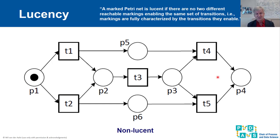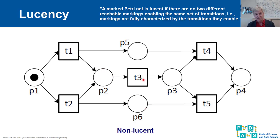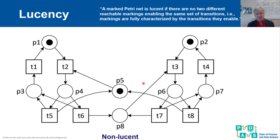This is an example of a net that is not lucent — and it is also not free choice. Why is it not lucent? If we fire T1, there is a token in P2 and P5, and only T3 is enabled. If we fire T2, there is a token in P2 and P6 — a different marking — but again only T3 is enabled. So these two different reachable markings both enable exactly the same set of transitions, namely only T3.